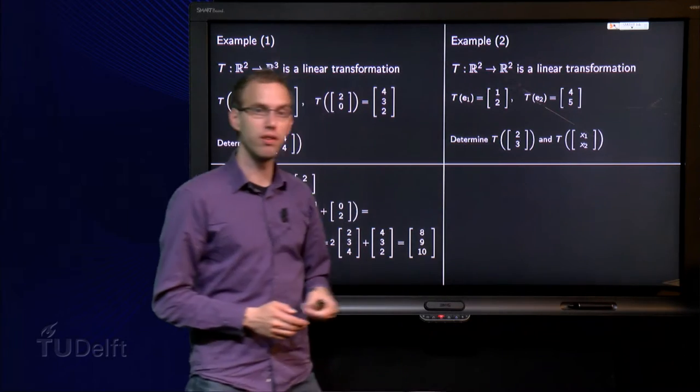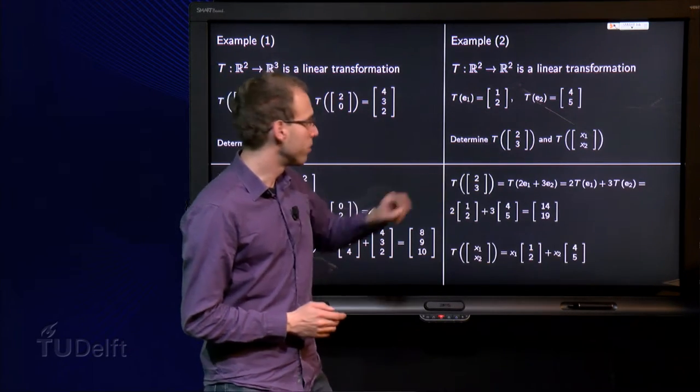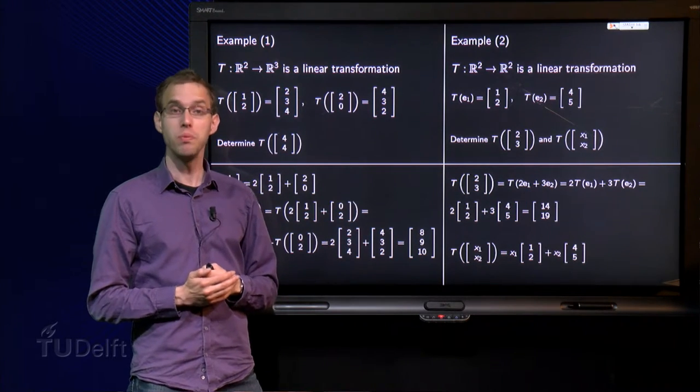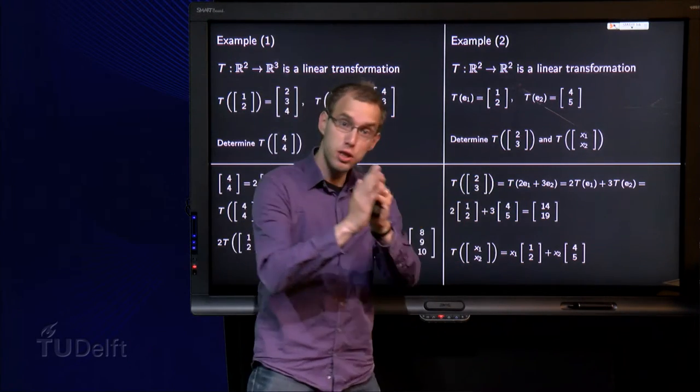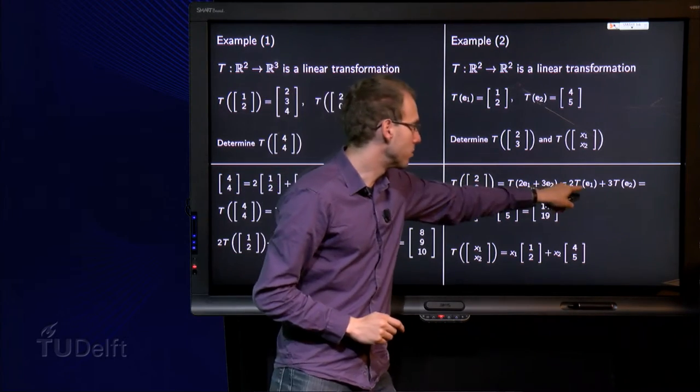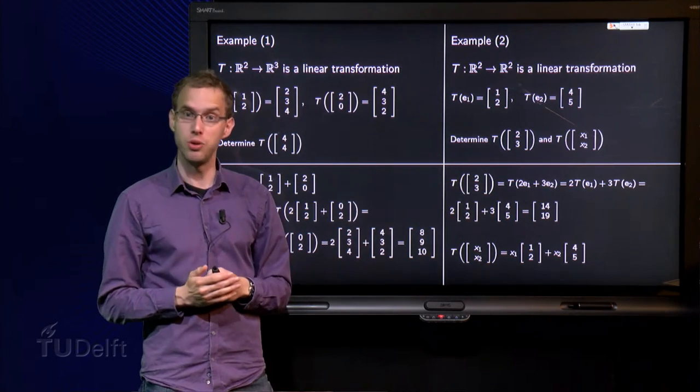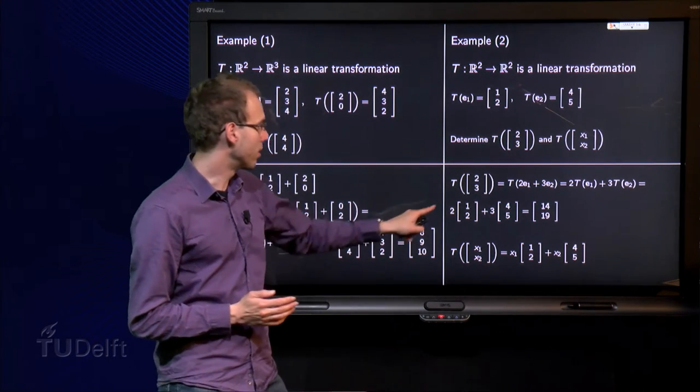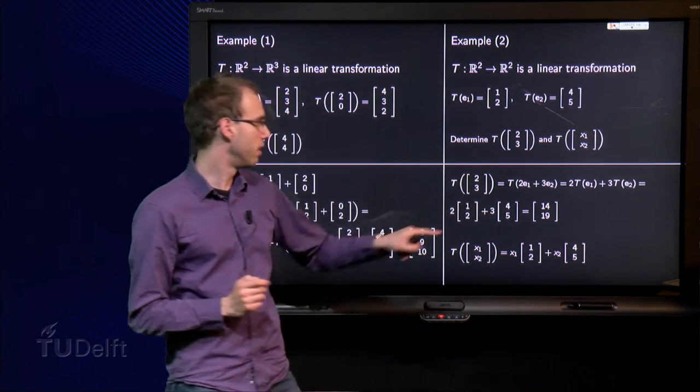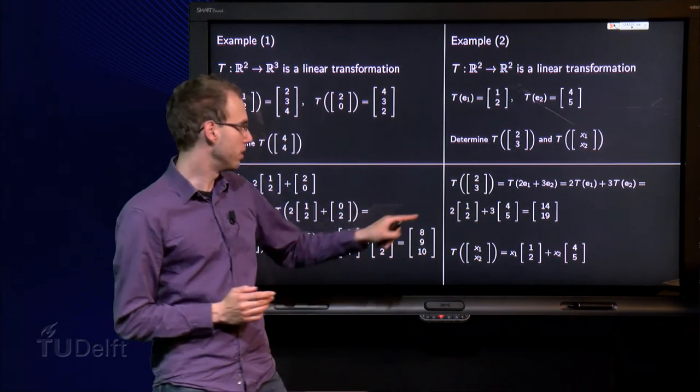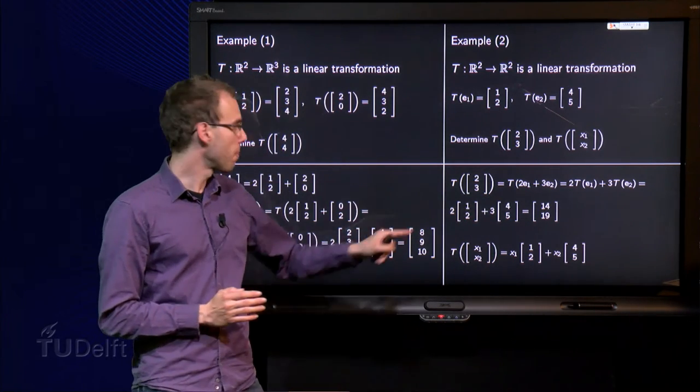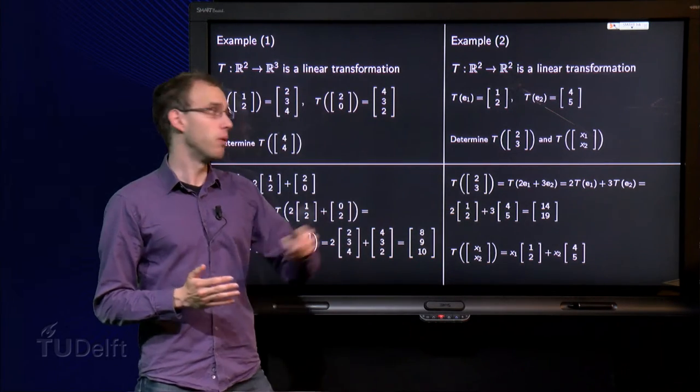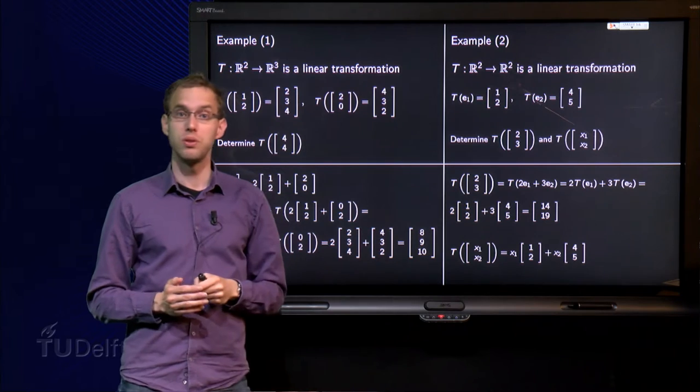Well, let's look at the (2,3) first. Well, (2,3) equals 2 times E1 plus 3 times E2. Then we can split it up again. 2 times T(E1) plus 3 times T(E2). And then we can plug in the numbers. So we get 2 times (1,2) plus 3 times (4,5) which yields 2 plus 12 equals 14. And 4 plus 15 equals 19. So, indeed we can find the image of (2,3).